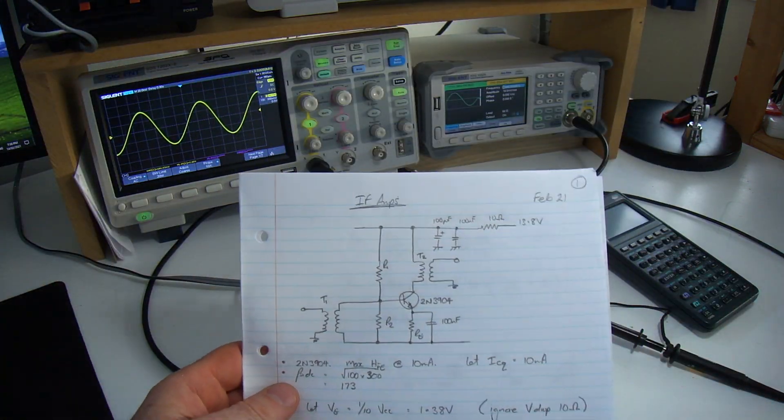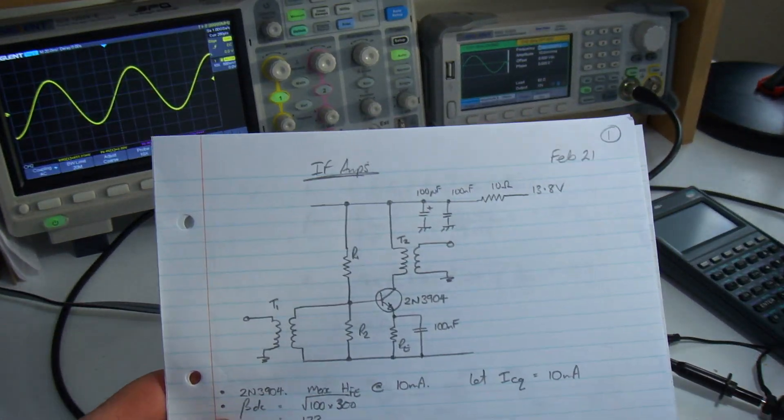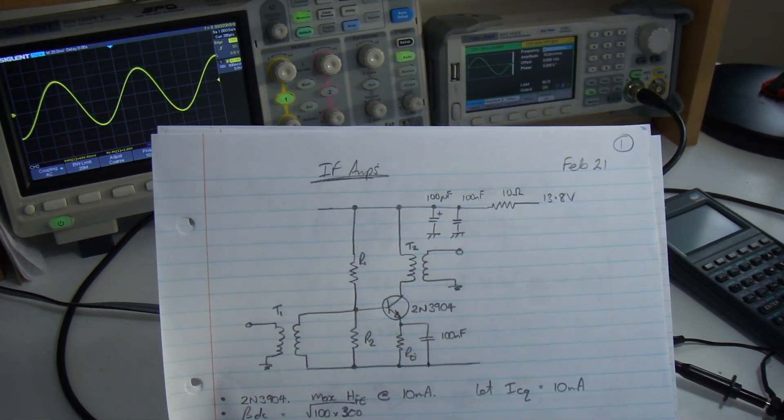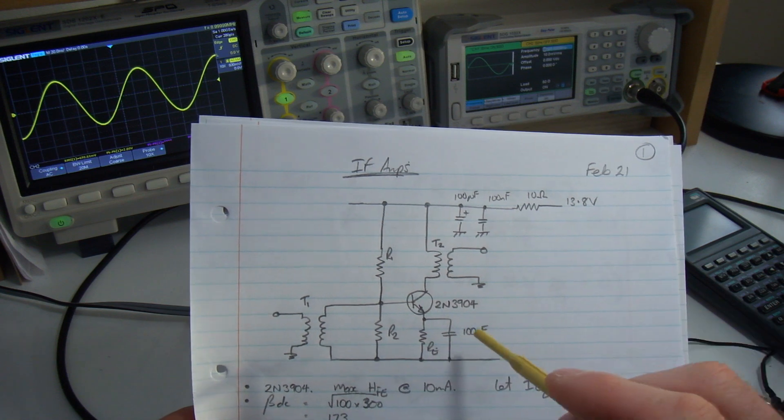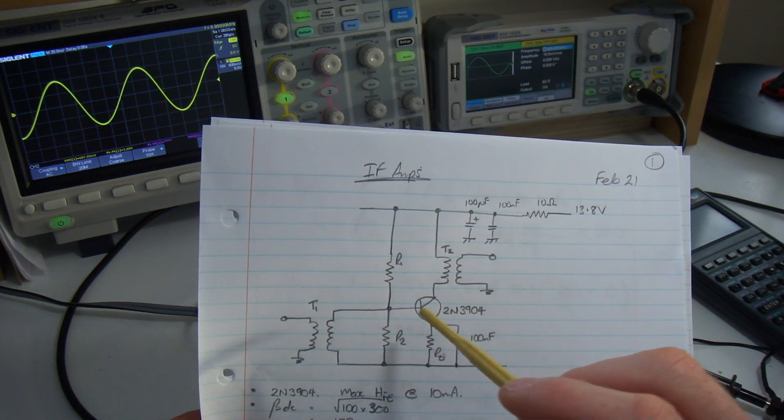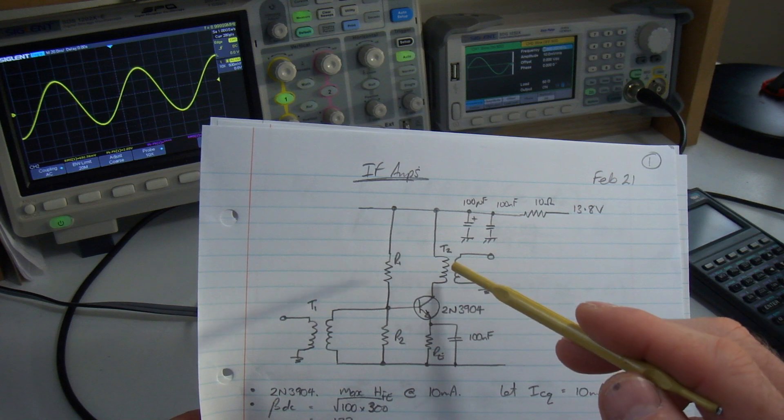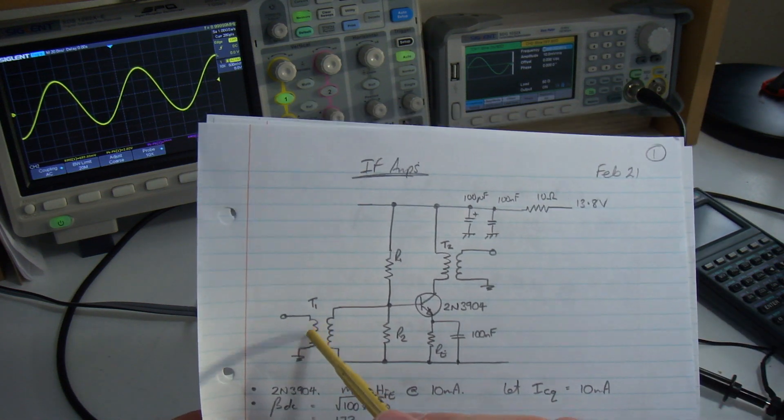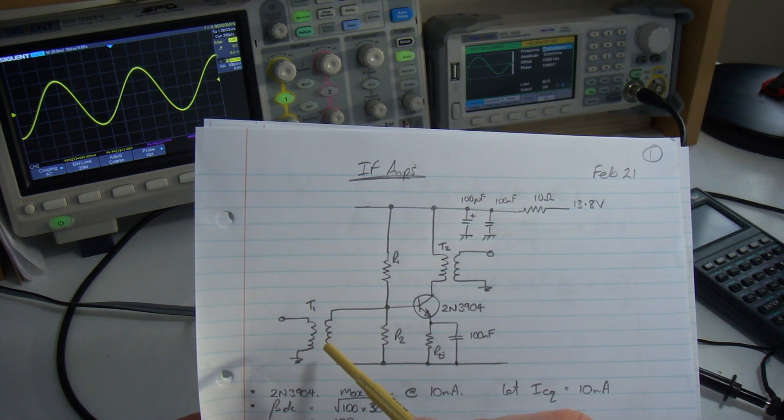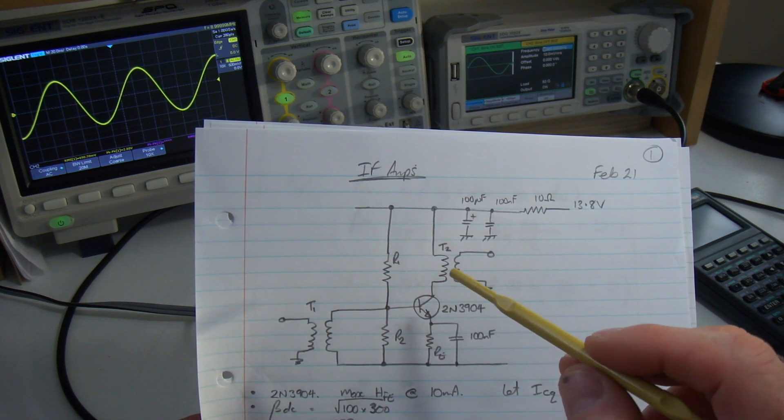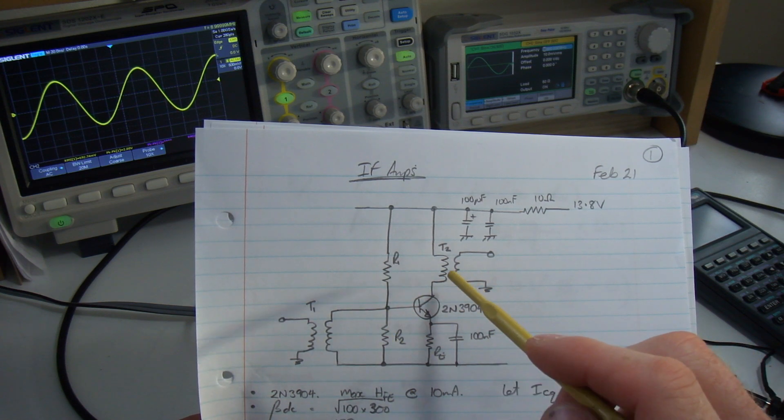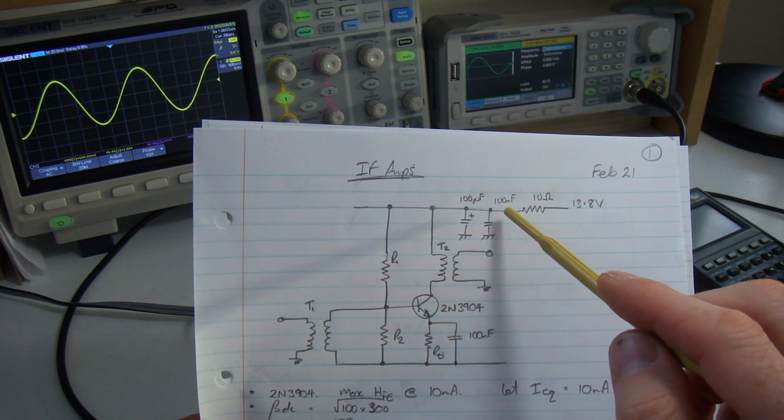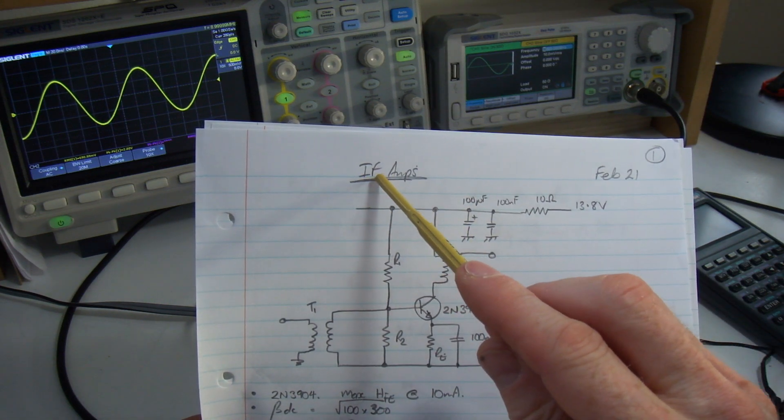So let me just zoom up on this and hopefully it'll make sense. It's a common emitter amplifier using the 2N3904, signal coming in on the base and the output being developed across this transformer here. Two transformers, one for the input and one for the output, both FT37-43s.